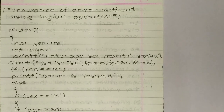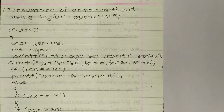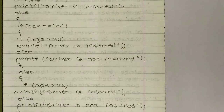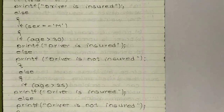After checking marital status and printing that the driver is insured, we go to else if: if sex is equal to male and age is more than 30, then printf driver is insured. Else printf driver is not insured.